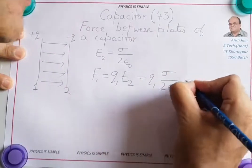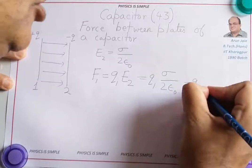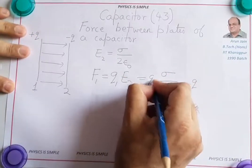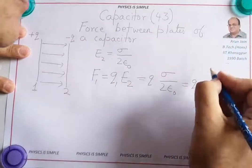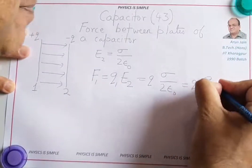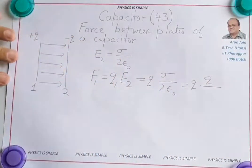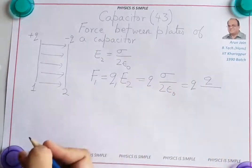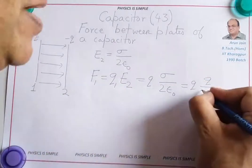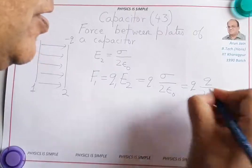And sigma is defined as charge per unit area. This Q1 is Q. And sigma is also Q by A. Plates are having equal and opposite charge. So the magnitude of charge on both is Q only. So Q by 2 into A into epsilon naught.